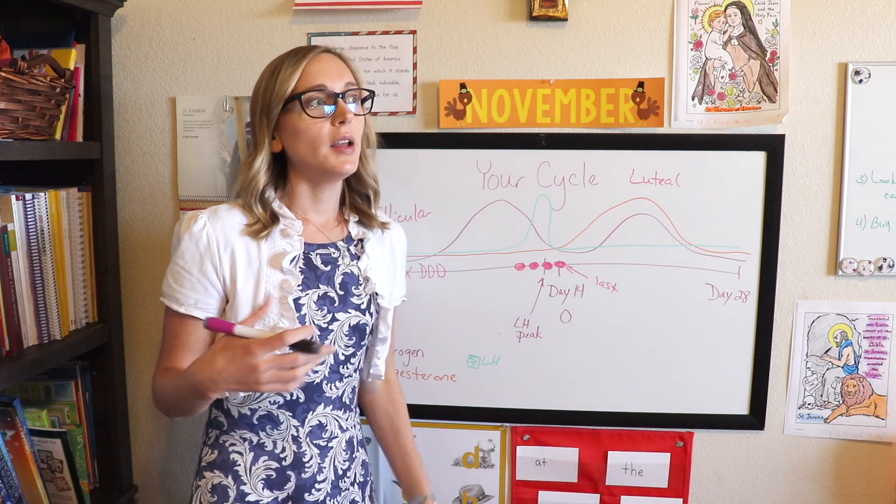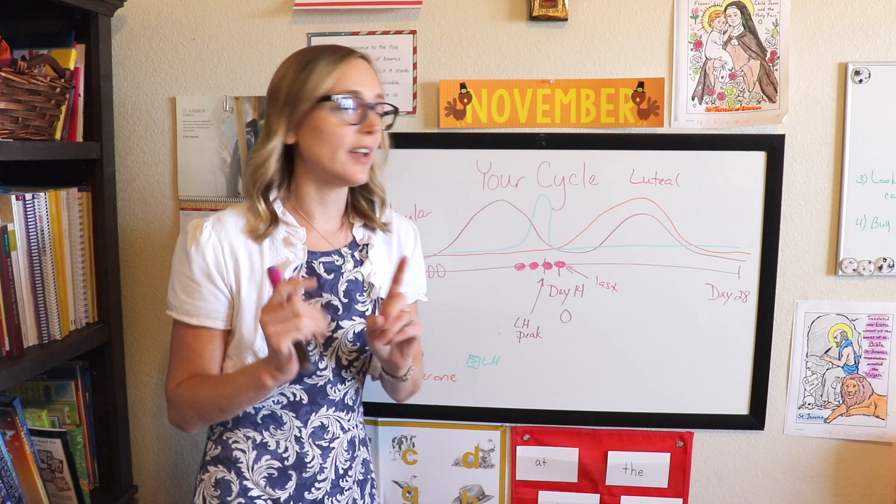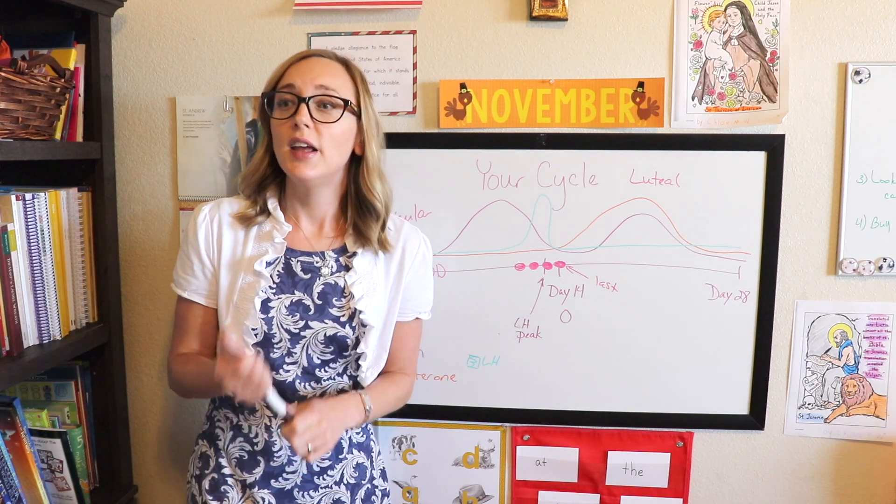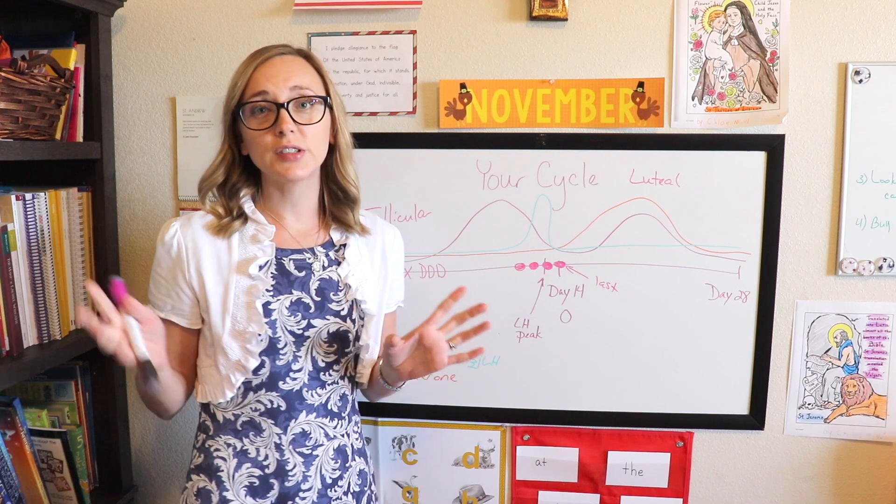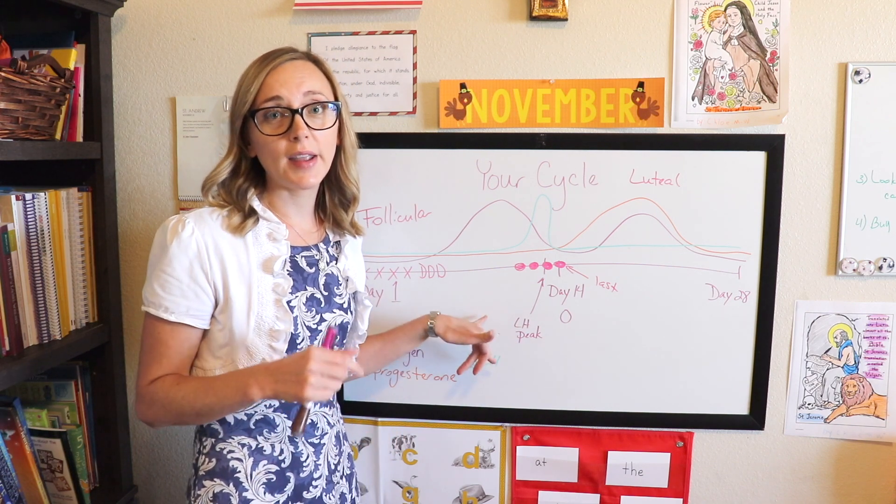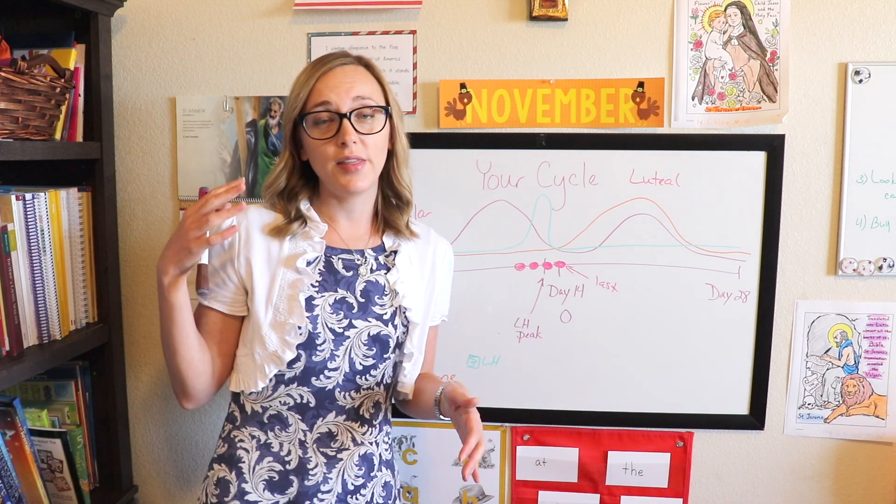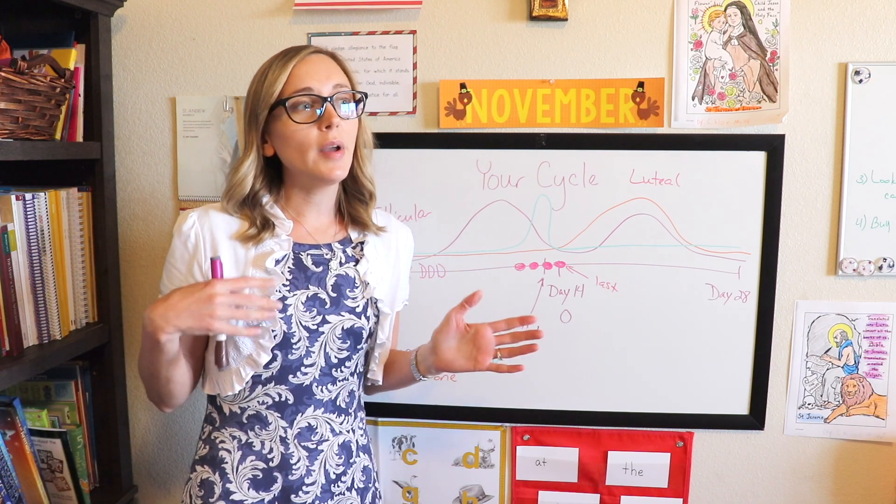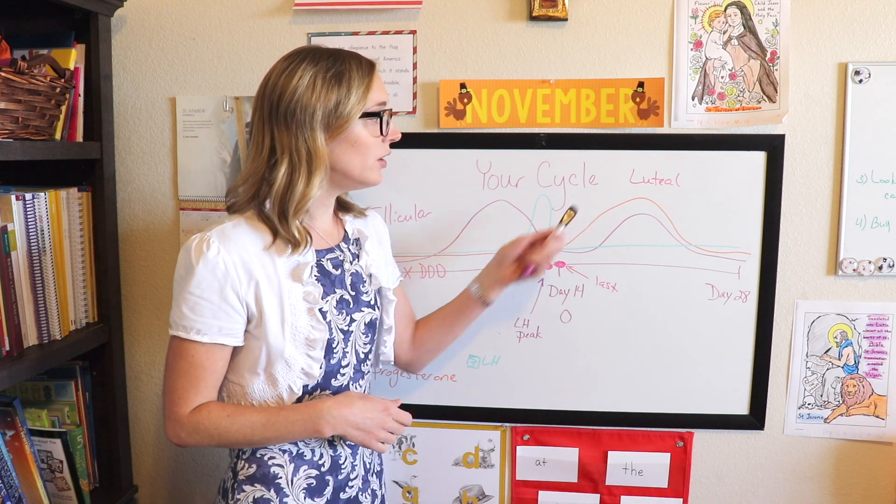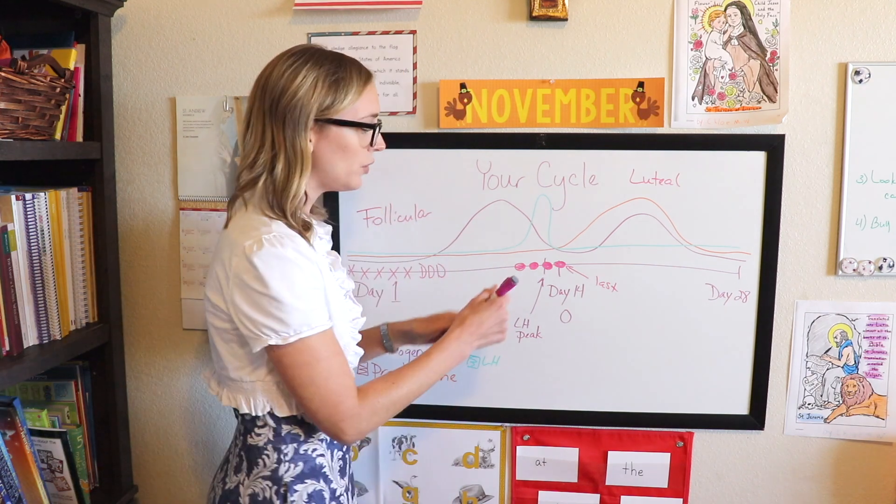A positive LH test is either going to be, the lines are going to be equal or the test line is going to be darker than the control line. And so your peak, which is that really, really dark line that's darker than your control line is going to happen 12 to 48 hours before you ovulate. So when you are testing with LH, that does not mean that your peak is your ovulation. Your ovulation could technically occur in the same day. If you say you get your peak early in the morning and then you ovulate later that night. But the only way to test for actual ovulation is to either get Proov strips, which tests your progesterone level or track your symptoms or take your temperature, which this video is not about temping, but there's lots of videos online about temping.